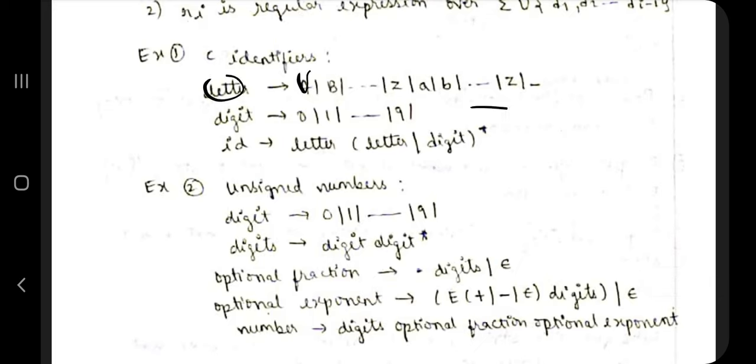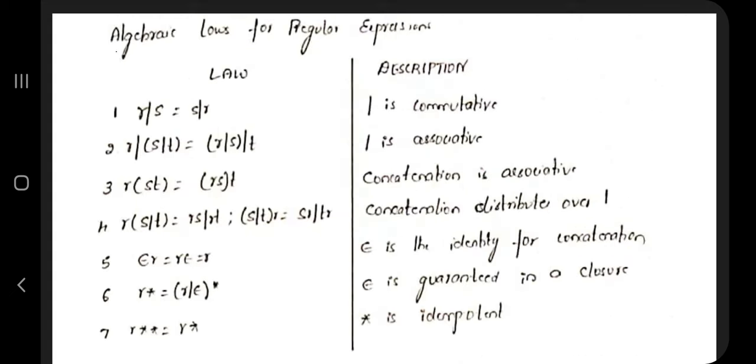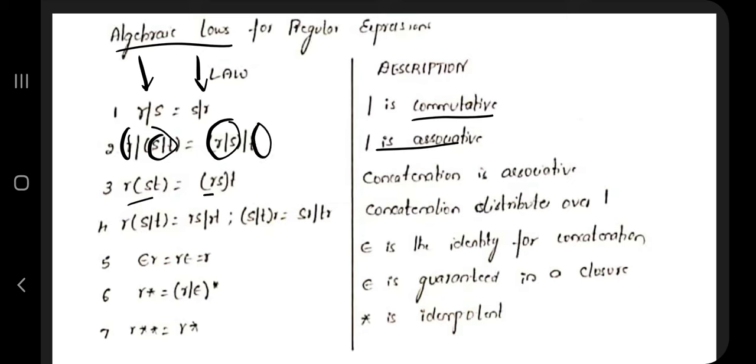Unsigned numbers include optional fractions and optional exponents, which are used less frequently. You should also know the algebraic laws for regular expressions: the commutative law (R|S = S|R), the associative law (R|(S|T) = (R|S)|T), and similar rules for concatenation. These allow valid reordering of expressions.